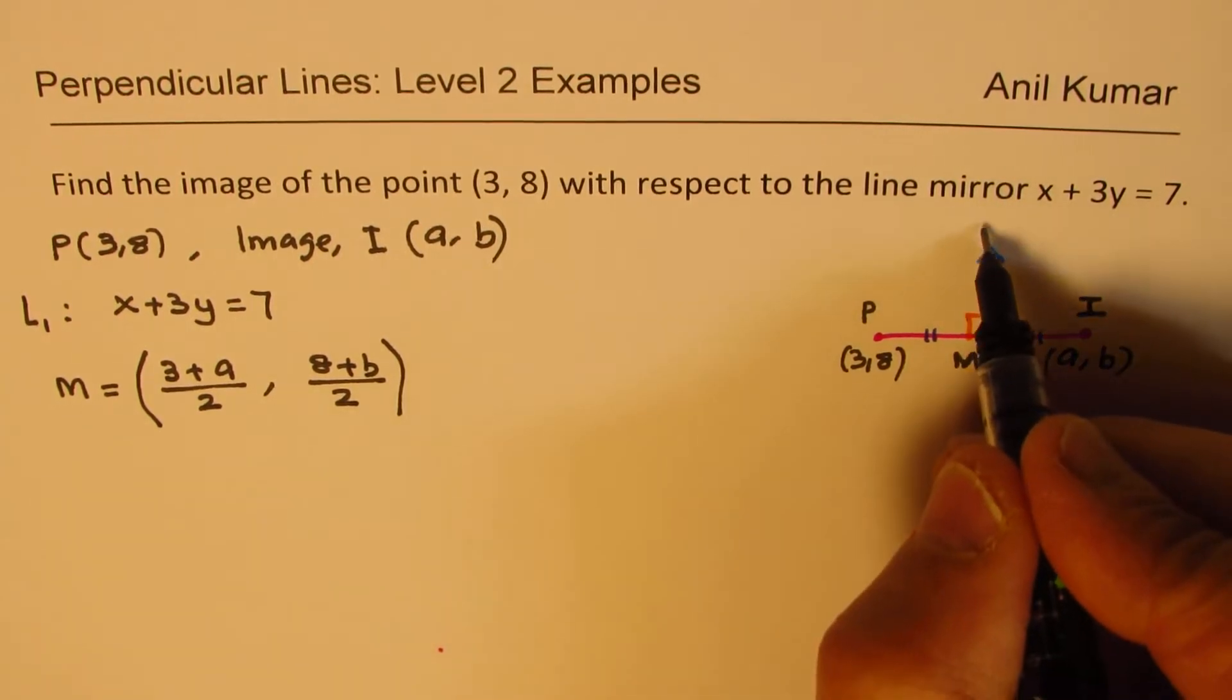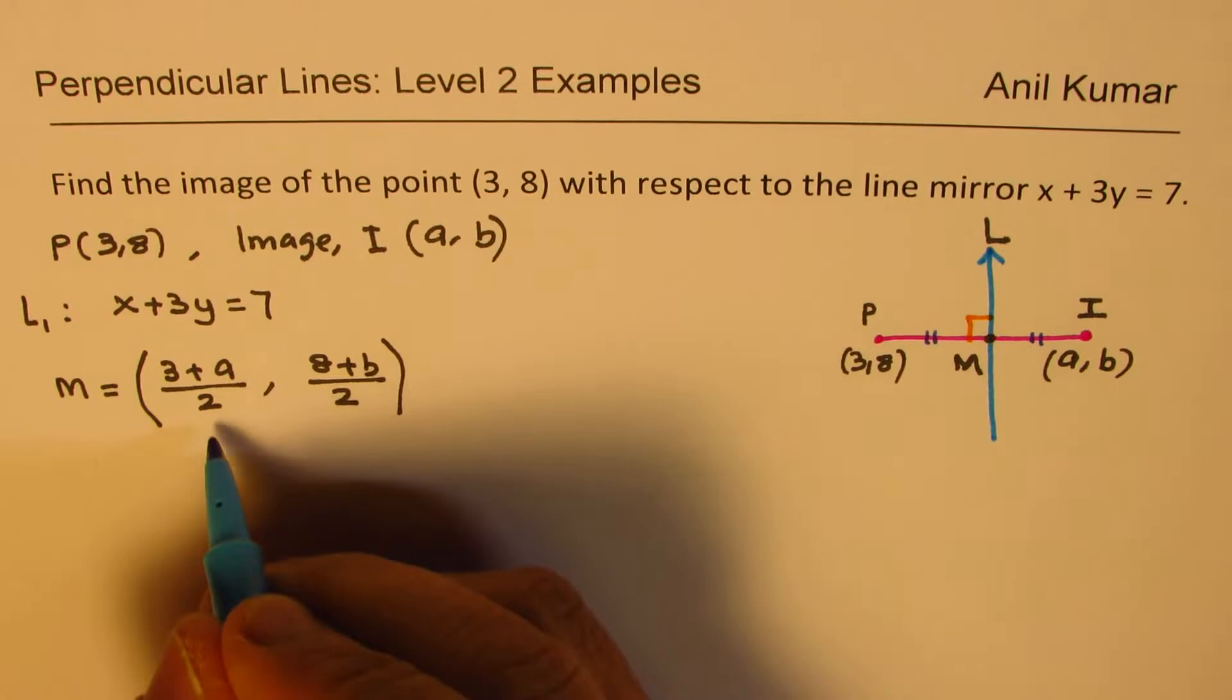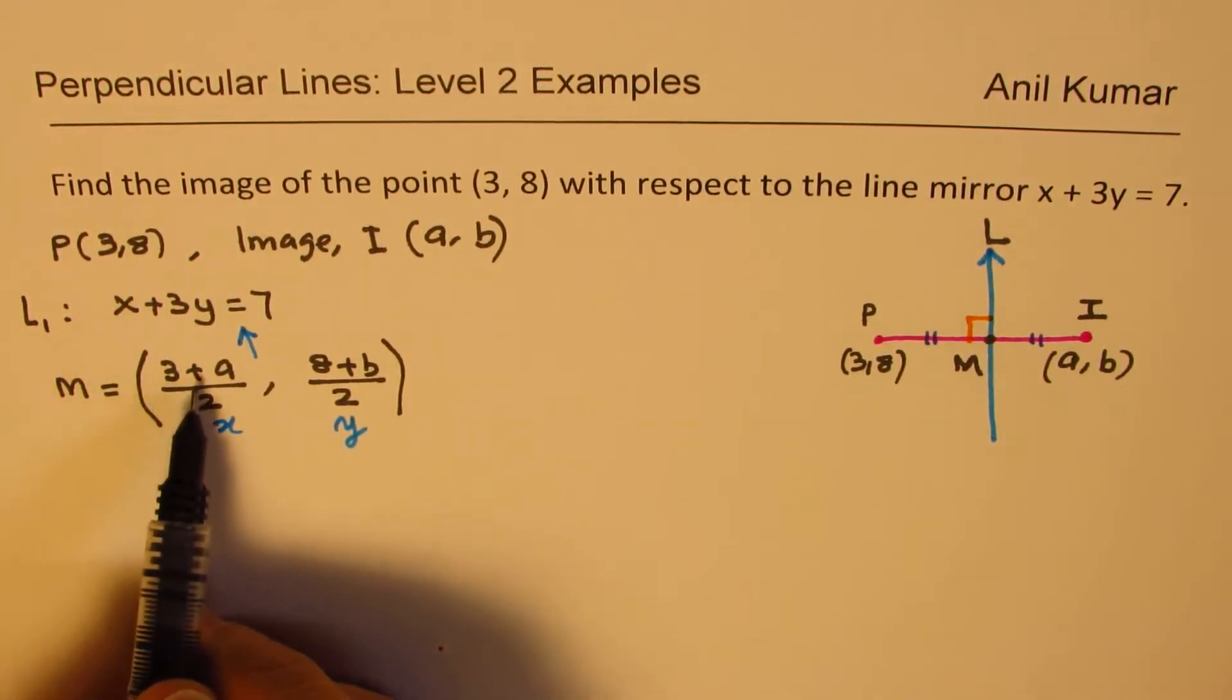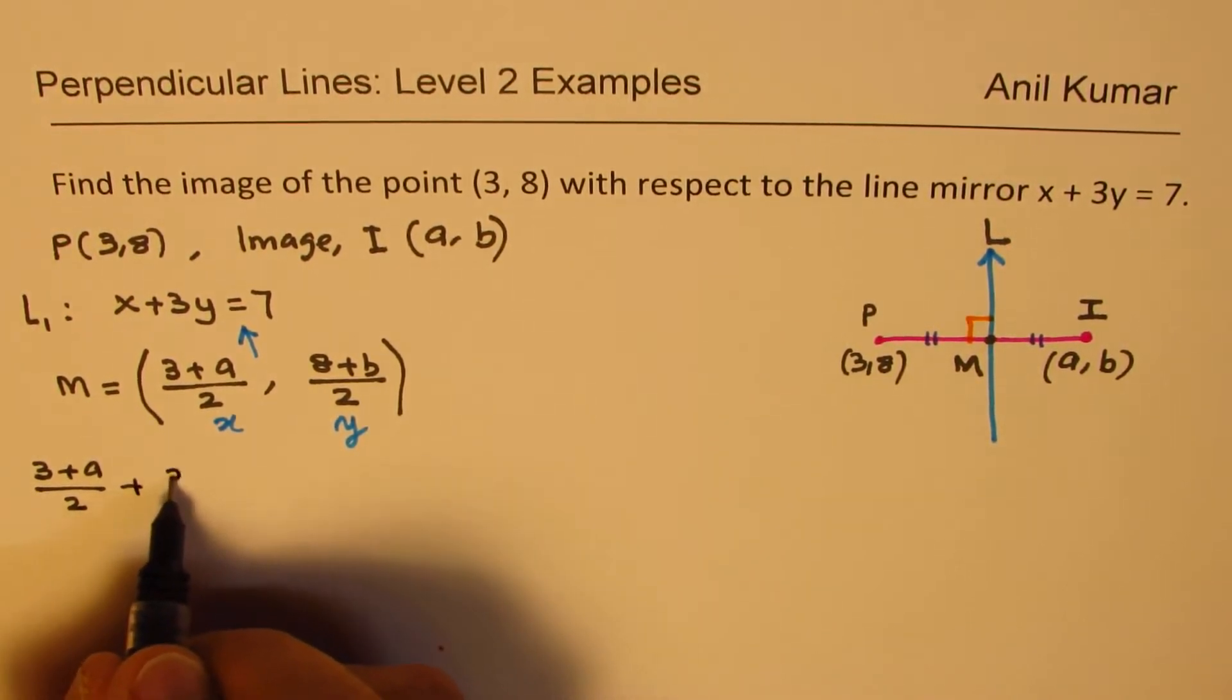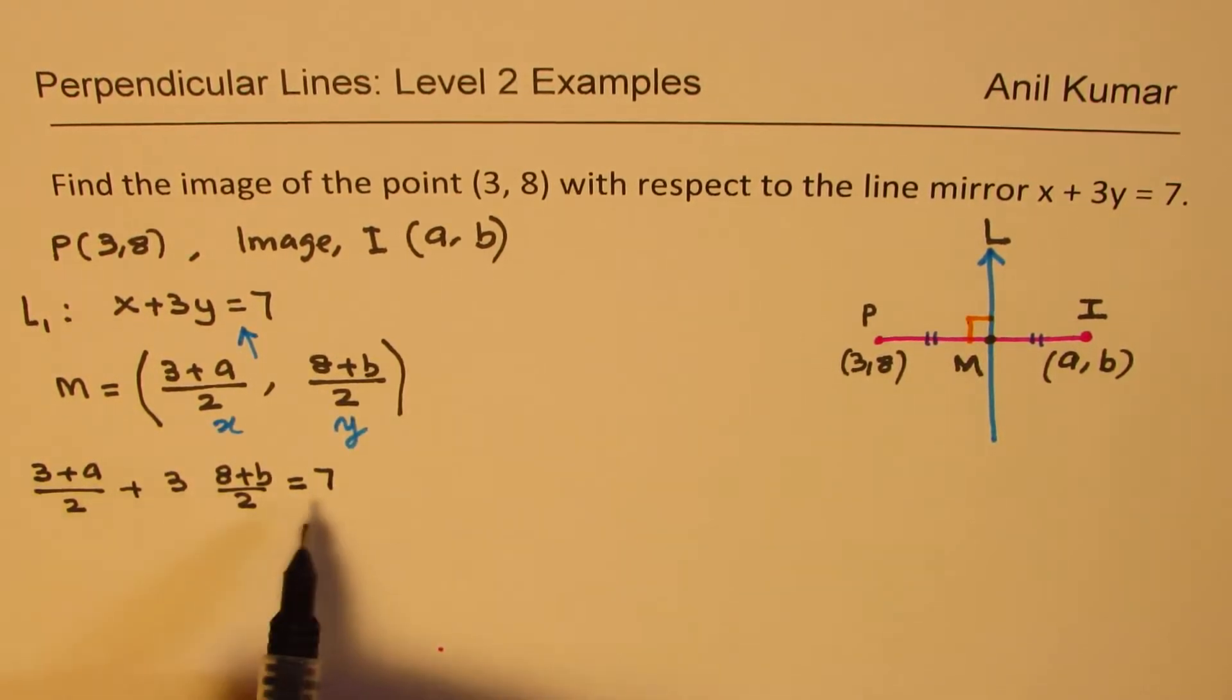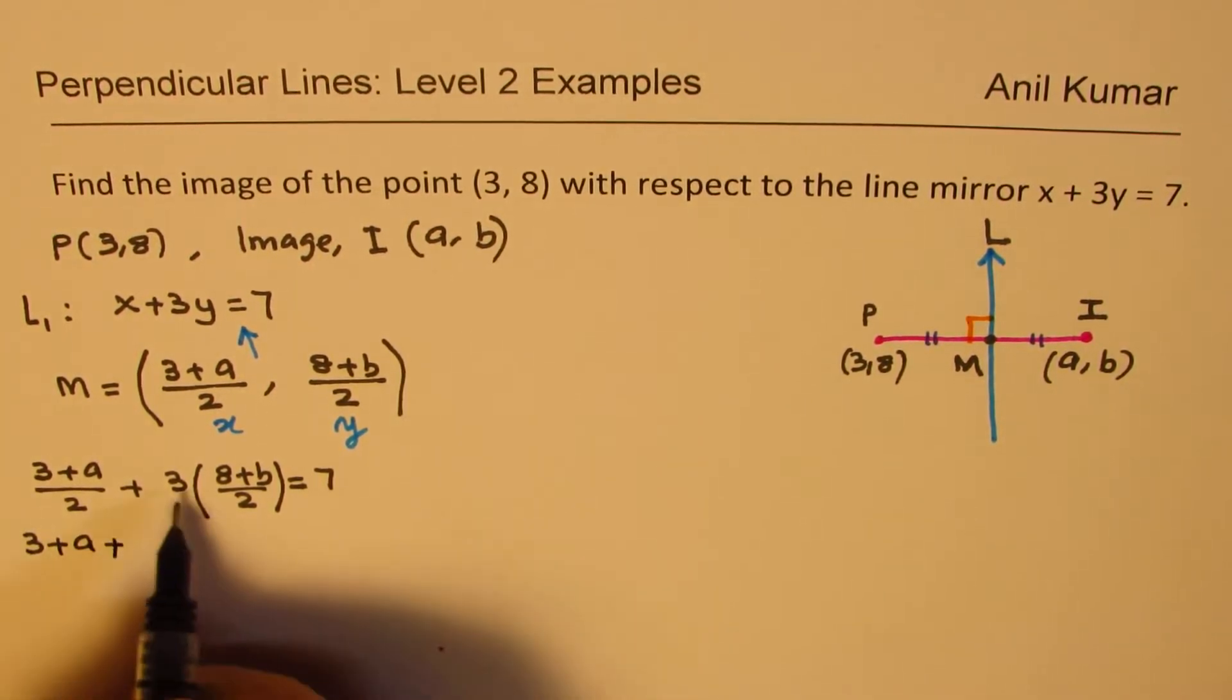Now this midpoint is on our line L. So it has to satisfy the equation of the line. So I could substitute this value for x, and this value for y, in this particular equation. So that will give me one of my equations. So I have here, instead of x, I am writing (3 + a)/2, plus 3 times, instead of y, we are writing (8 + b)/2, and that should be equal to 7.